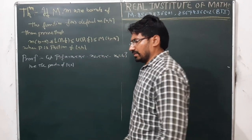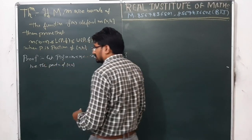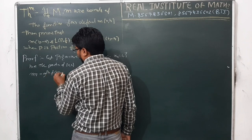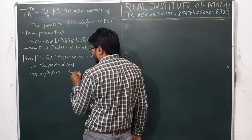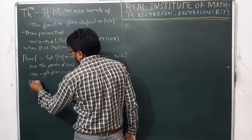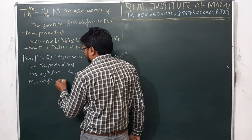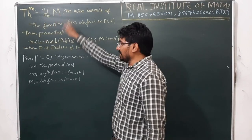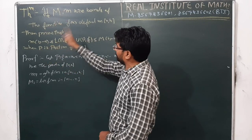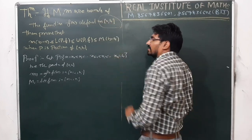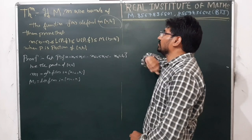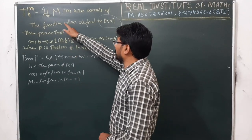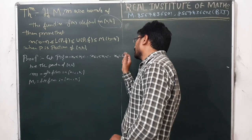As usual, let mᵢ be the greatest lower bound of f(x) within the interval [xᵢ₋₁, xᵢ], and Mᵢ be the least upper bound of f(x) within the interval [xᵢ₋₁, xᵢ]. Capital M and small m are the bounds for the main interval [a,b]: M is the least upper bound and m is the greatest lower bound of f(x) on [a,b].